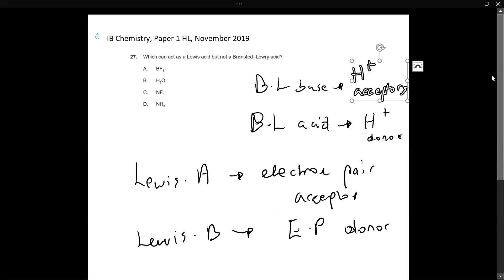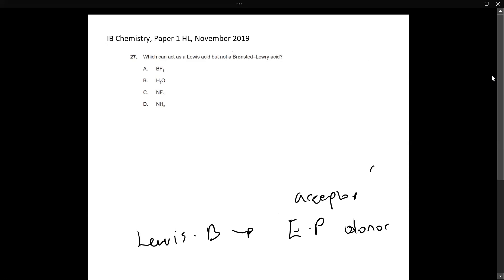So now that we've got our definitions out of the way, let's take a look at these options. Let's see which of these options fits the criteria that our question is asking us. So which of these options can accept a pair of electrons, but it cannot donate a hydrogen or an H plus. Now, what I like to do with MCQs mostly is I like to play the elimination game. So I eliminate one or two options which seem most unlikely. And out of these options, B and D are automatically out because it's told us in the question that the substance or the element cannot be a Bronsted Lowry acid. And both of these substances can act as Bronsted Lowry acids.